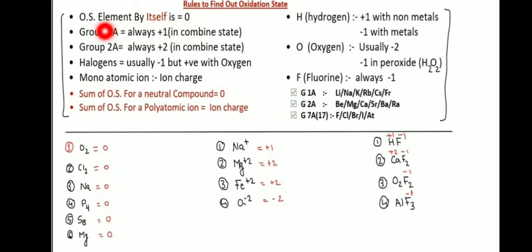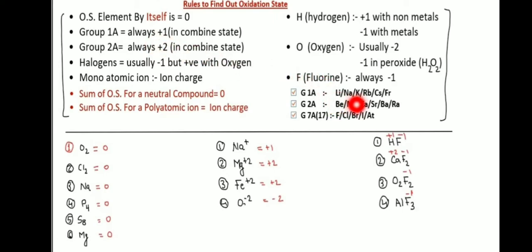Group 1A elements always have oxidation state plus one. Group 1A includes: Lithium, Sodium, Potassium, Rubidium, Cesium, and Francium.